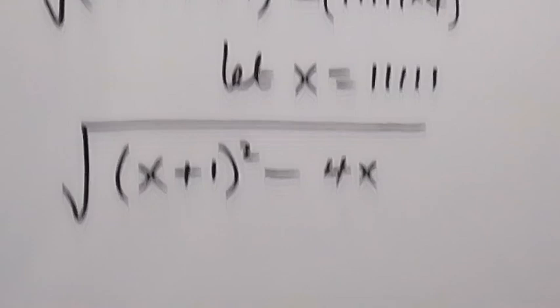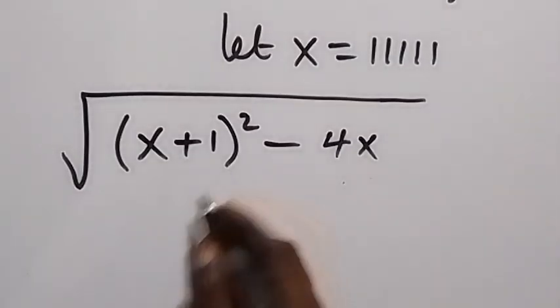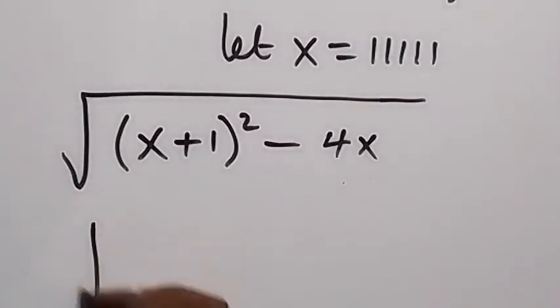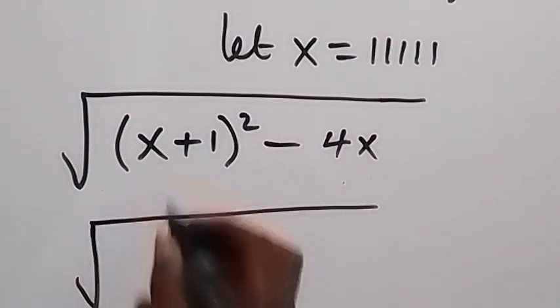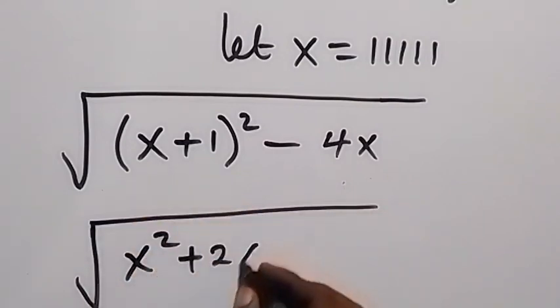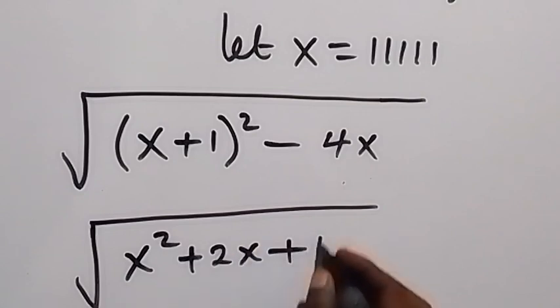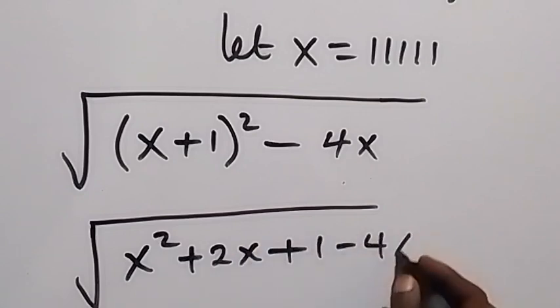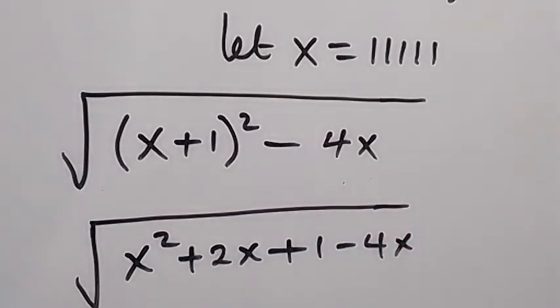Then in the next step we can expand this, and this will be square root of expansion of this gives us x squared plus 2x plus 2x plus 1, then minus 4x.